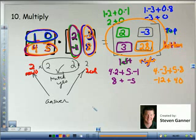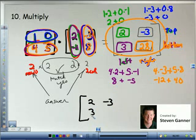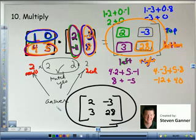So here is your answer. Let me write the answer a little more clearly. I'm going to write the answer nice and neat. 2, negative 3. Positive 3. 28. That is your answer.